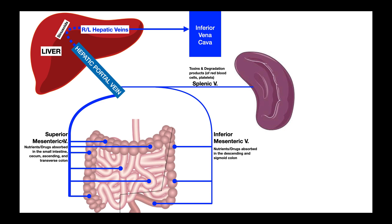For example, if you have a drug that gets through the GI tract and is ultimately absorbed in any part of the small intestine or the ascending or transverse colon, it's actually picked up by the superior mesenteric vein. You can see a bunch of branches going to each of those regions. That drug is then absorbed into the superior mesenteric vein, which ultimately dumps into the hepatic portal vein.